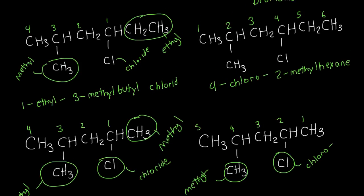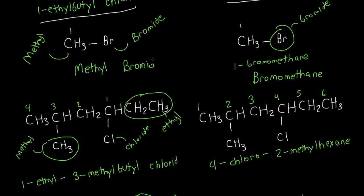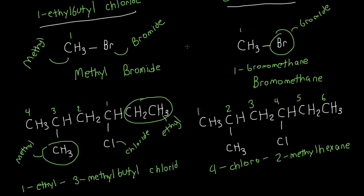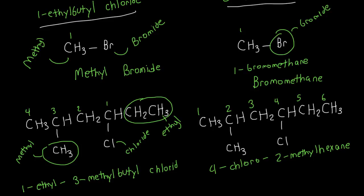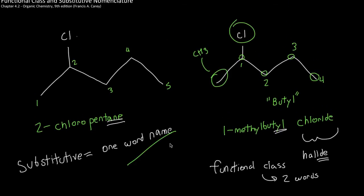Looking over the names, you can see they have similarities but are clearly different. The biggest thing to remember: one-word names for substitutive nomenclature, and two-word names for functional class. If you need extra help on substitutive naming — IUPAC naming — I have more videos on my channel. Functional class naming may only appear once or twice in the whole course, but those points could be the difference between a high mark and a very high mark.